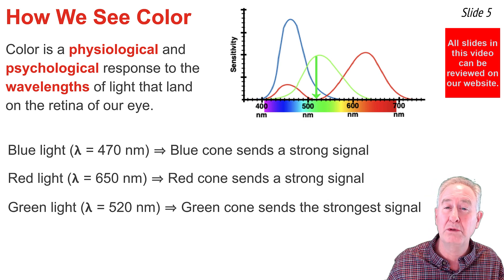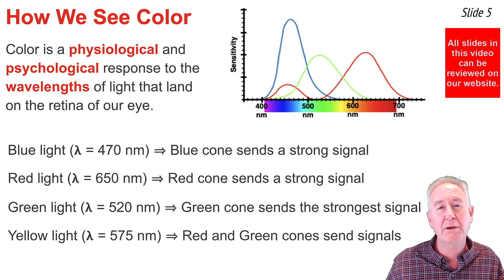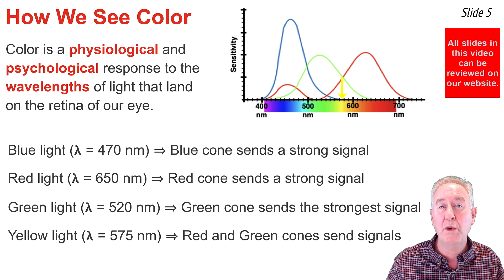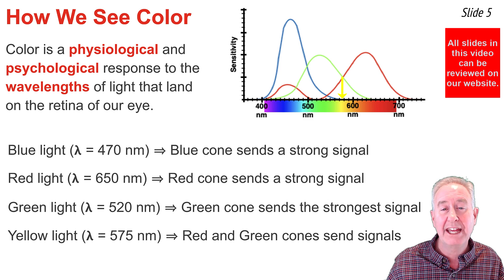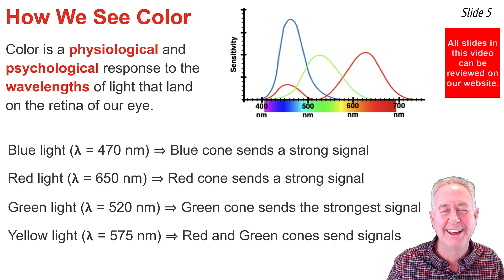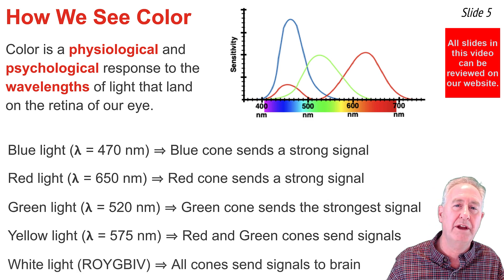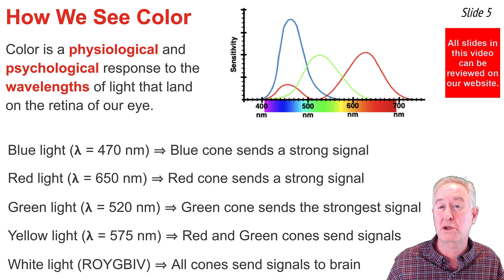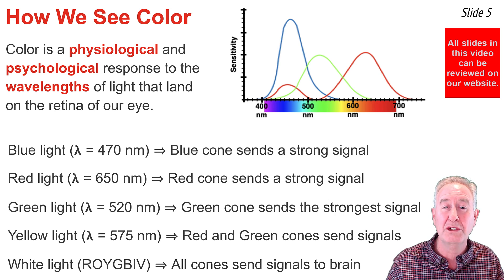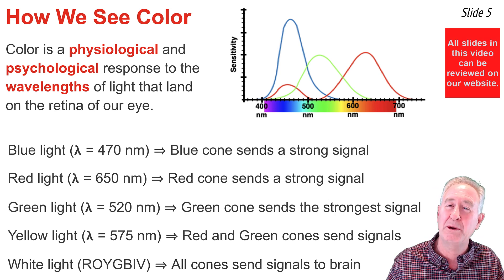A weaker signal would be sent by the blue cone. When yellow light with a wavelength of 575 nm strikes the retina, both the red and the green cone respond physiologically and send an equal strength signal to the brain, which the brain interprets to mean that's yellow light. Finally, when white light with all the wavelengths of the visible light spectrum strikes the retina, all the cones respond and send signals to the brain, which interprets it to mean: I'm looking at a white object.